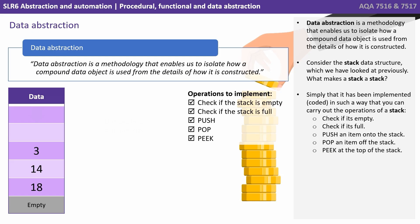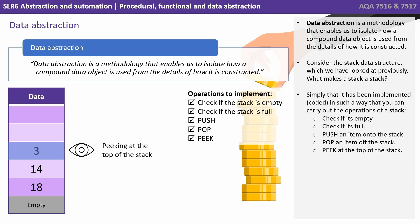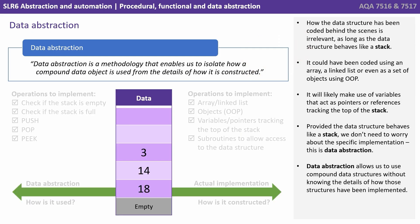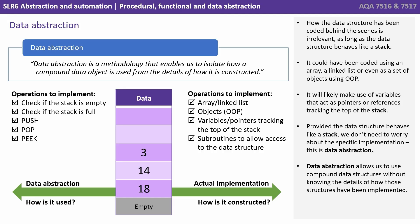Can we check if it's empty, check if it's full? Can we push an item onto the stack, pop an item off the stack and peek at the top of the stack? How the data structure has actually been coded behind the scenes is irrelevant as long as the data structure behaves like a stack. It could have been coded using an array, a linked list or even a set of objects using OOP. It will likely make use of variables that act as pointers or references tracking the top of the stack. Provided the data structure behaves like a stack, we don't need to worry about the specific implementation.